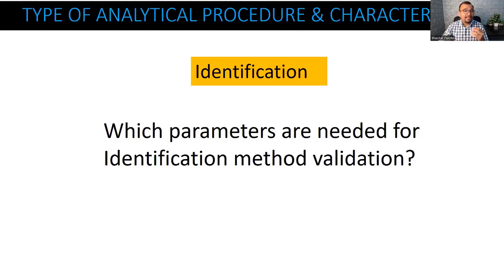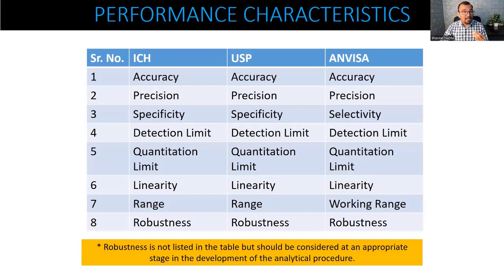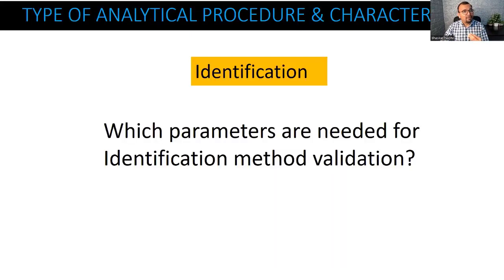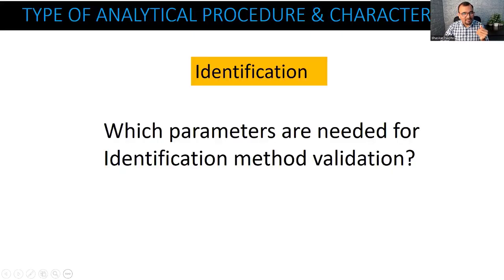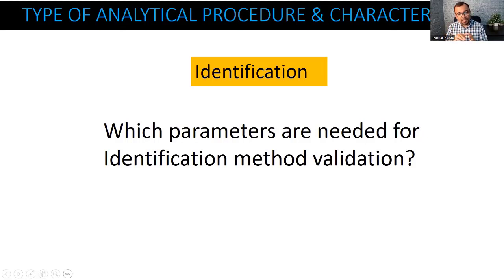We talked about eight different parameters. How do you confirm that for identification, do I need to take all eight parameters, or do I need to take one, three, or seven parameters? As there are many experienced people in the audience today, I would like to hear from all of you which parameter you consider during the validation of an identification testing procedure.